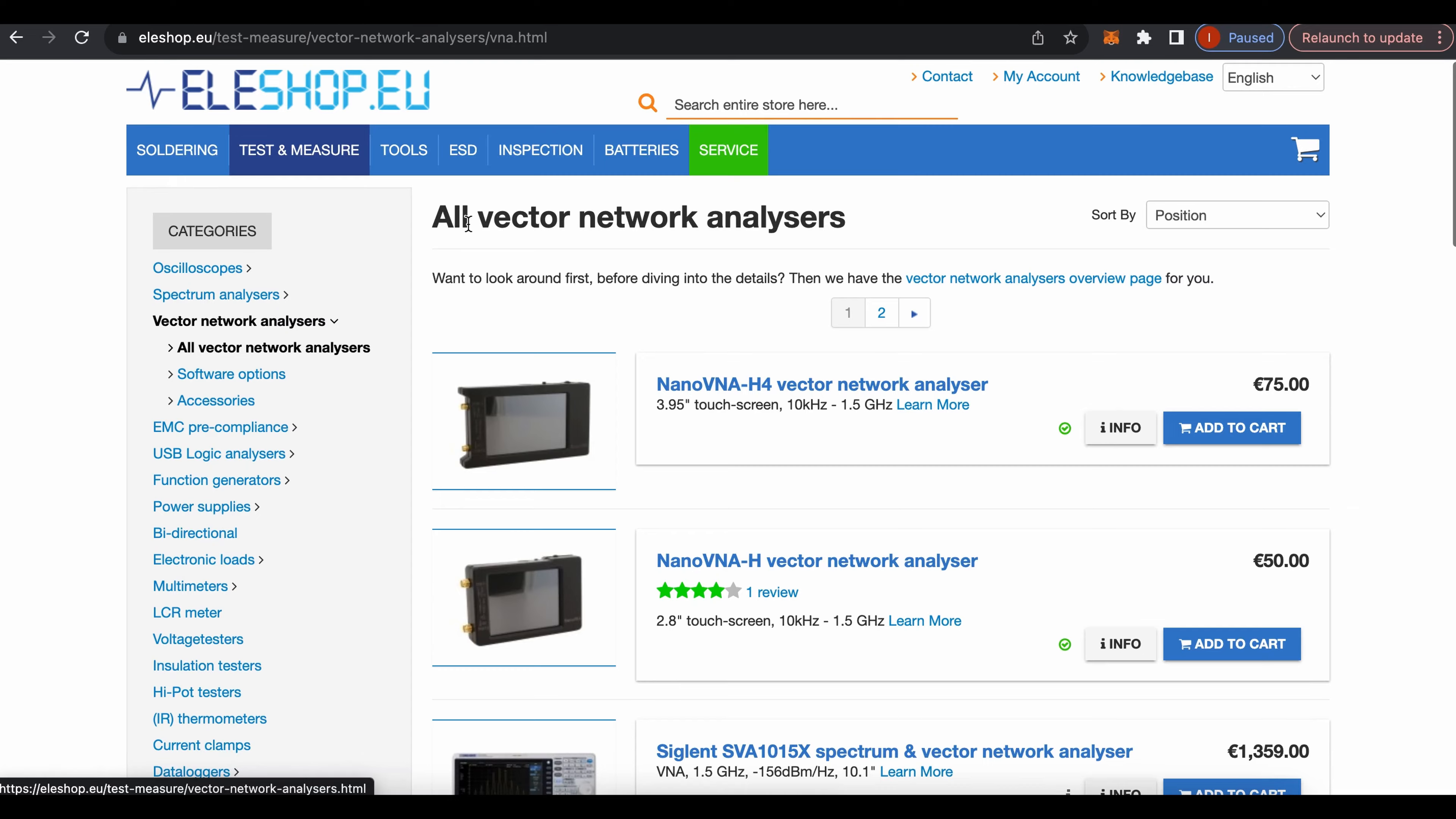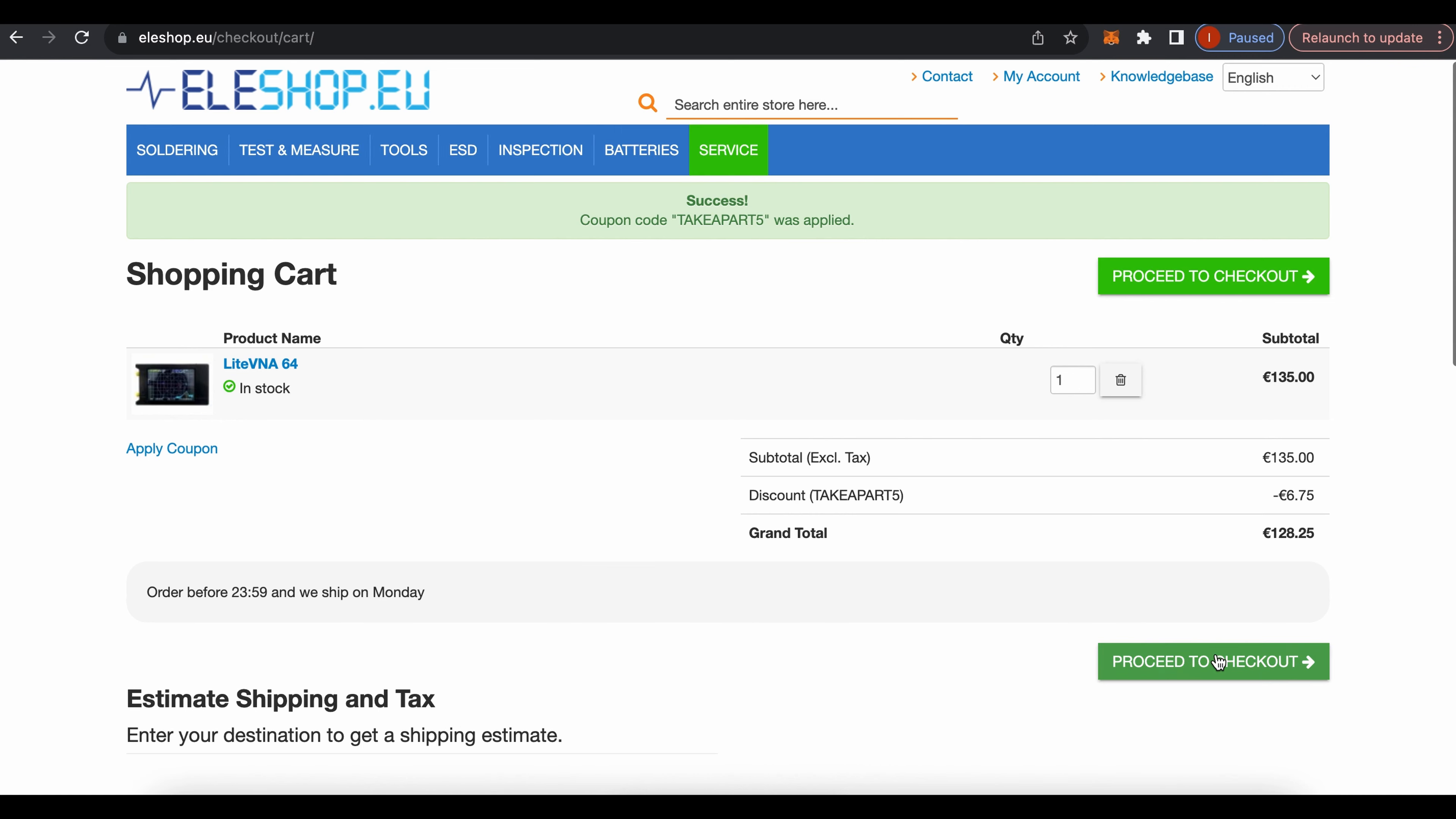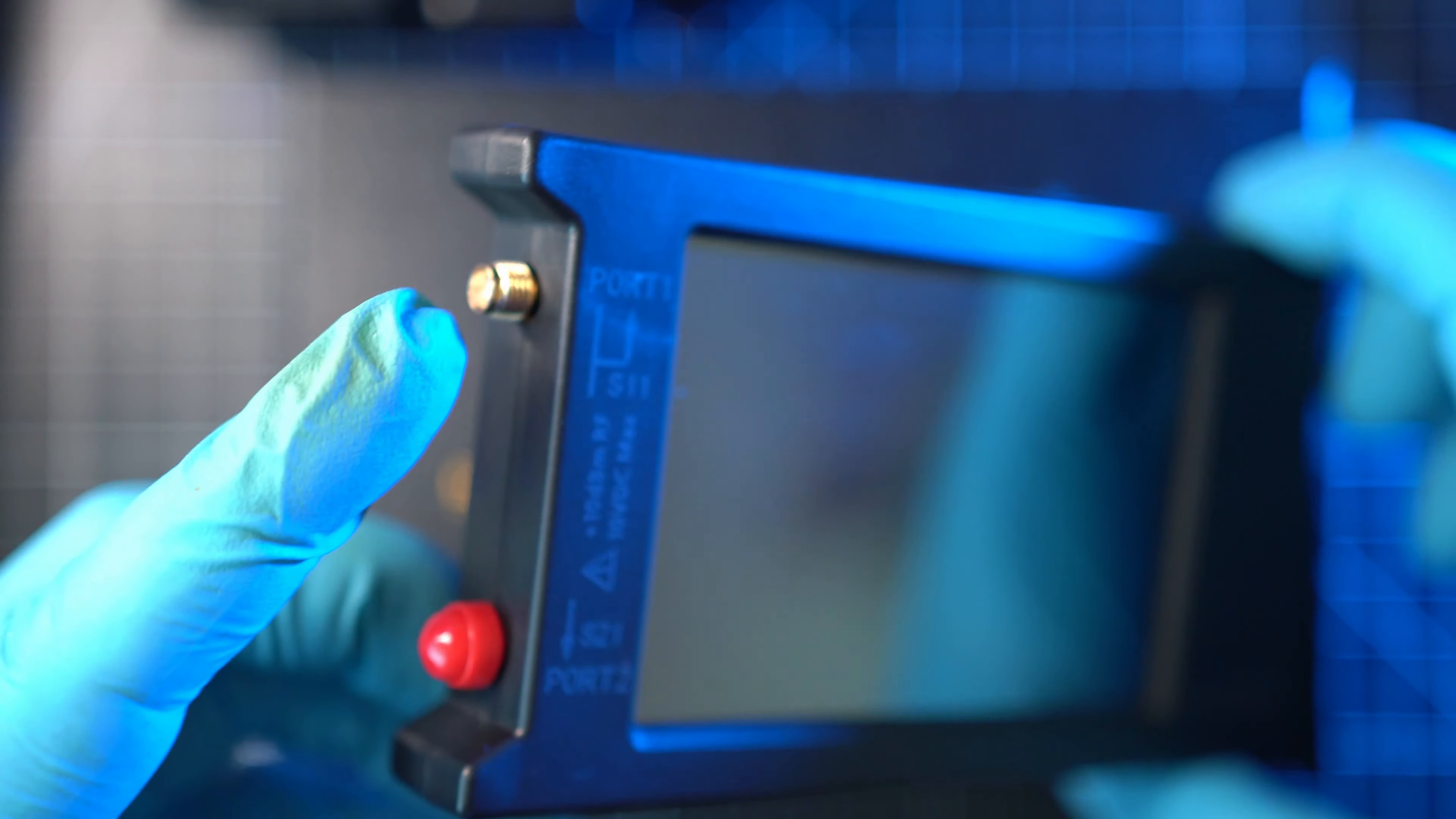If you want genuine NanoVNA or LiteVNA, head to eleshop.eu and use coupon code TAKAPARTH5 at checkout to get 5% discount, or use first link in description. eleshop.eu is authorized reseller, so you will get the real deal.